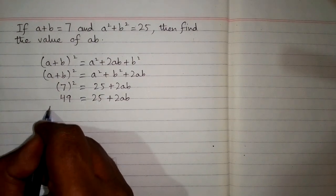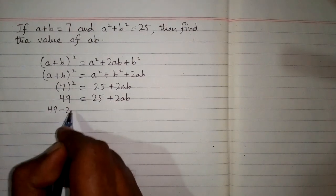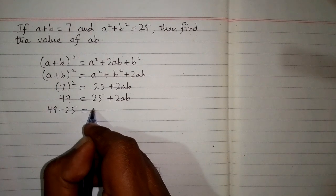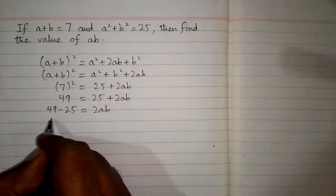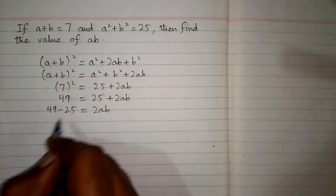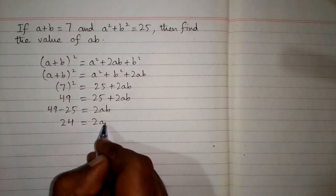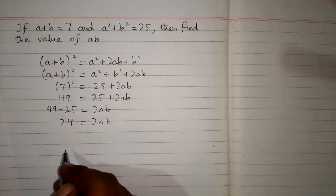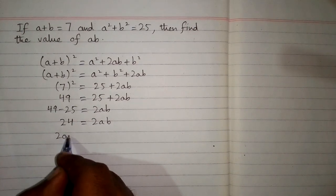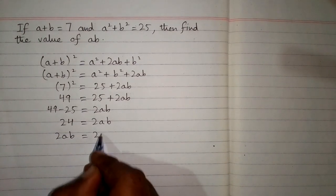So we have 49 - 25 = 2ab. Now this can be written as 2ab = 24.